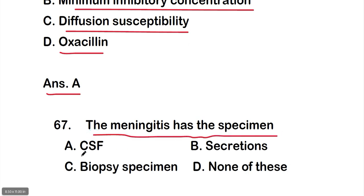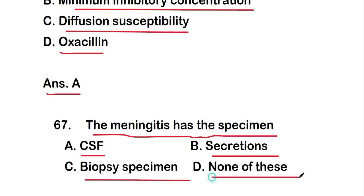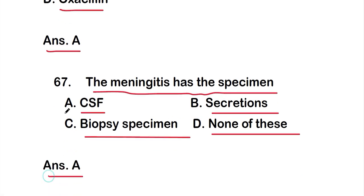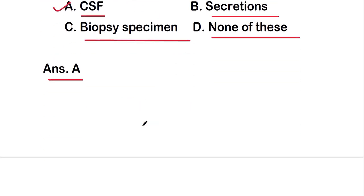Question 67: Meningitis has the specimen — option A: CSF (cerebrospinal fluid), option B: secretions, option C: biopsy specimen, option D: none of them. The right answer is option A, cerebrospinal fluid. Meningitis, which is a brain or spinal cord infection, is related to CSF.